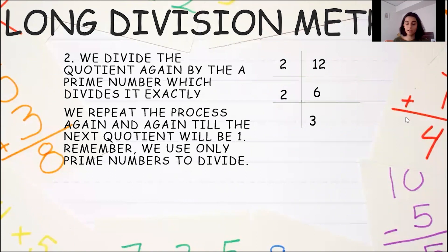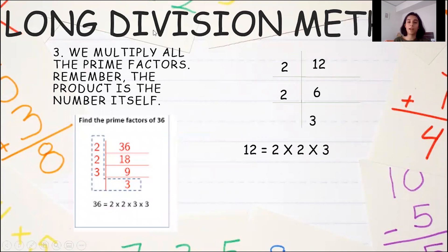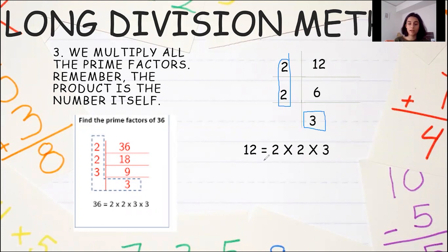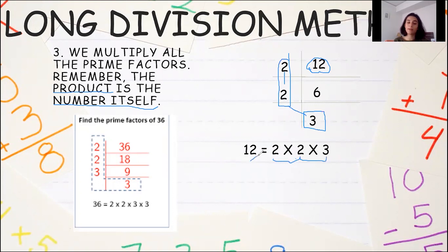So what is step 3? It is very simple: we multiply all the prime factors. You have found all the prime factors by doing the prime factorization of 12. You got the prime numbers 2, 2, and 3. So we multiply all the prime numbers together: 12 equals 2 into 2 into 3. We have to remember that the product is the number itself. So when you multiply all these prime numbers, you get back the original number, which is 12. 2 into 2 gives you 4, and 4 into 3 gives you 12. So we have successfully done the prime factorization of 12.